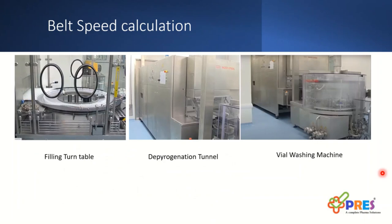In this slide, we will see how these three machines are interconnected. As part of interlock, higher tunnel infeed will stop the washing station.